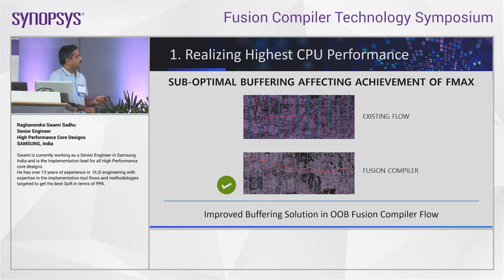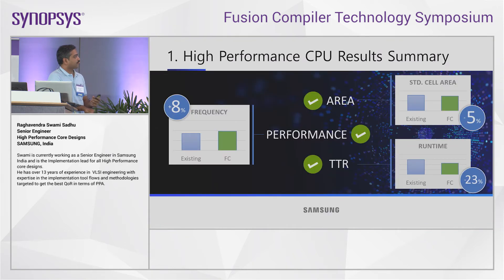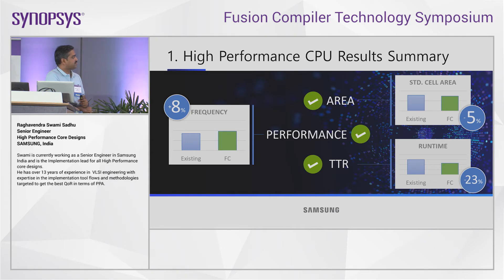With the existing flow, because of the packed density, the tool was not buffering some nets, which was causing them to appear on the critical path. With proper density in Fusion Compiler, it was able to buffer the paths evenly and we were out of the critical path. With Fusion Compiler, our experience on the ARM core design showed 8% frequency gain, 5% area gain in standard cell area, and 23% turnaround time improvement.